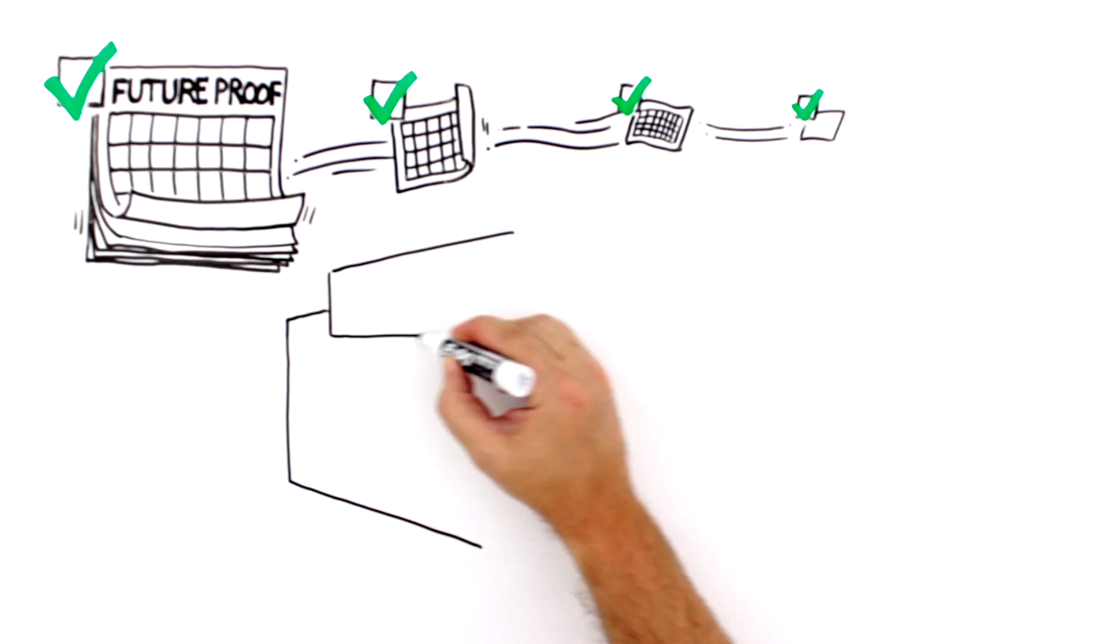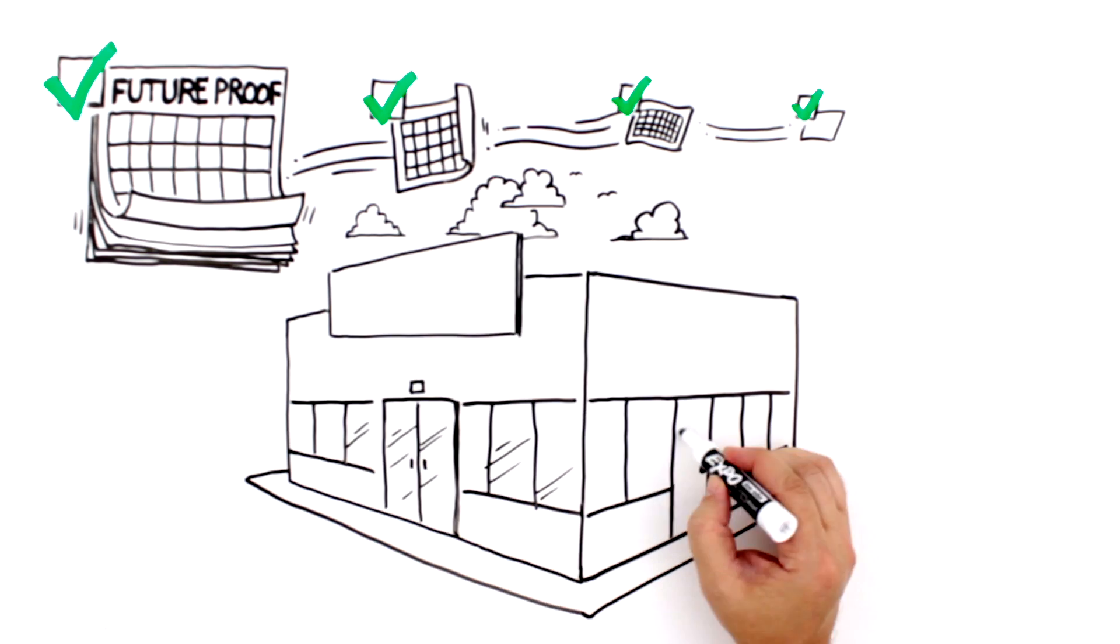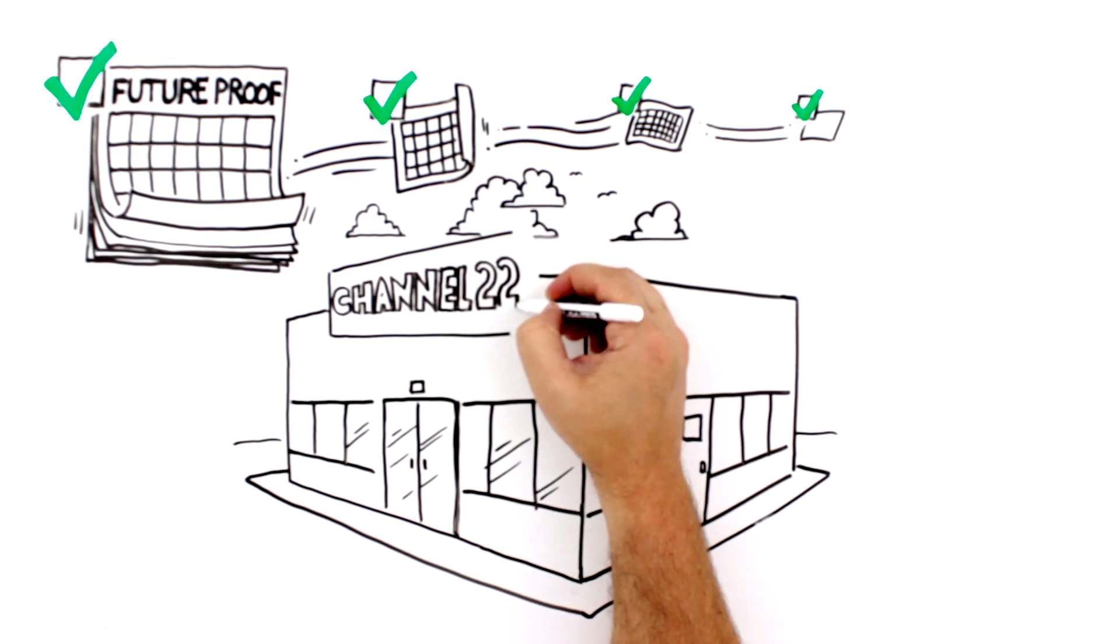Damon helps Fred future-proof Channel 46 by choosing the right equipment for their needs, so he won't have to upgrade or overhaul in slow bits and pieces.